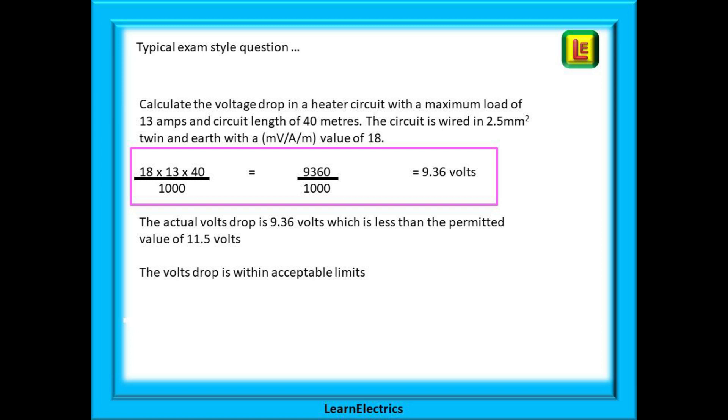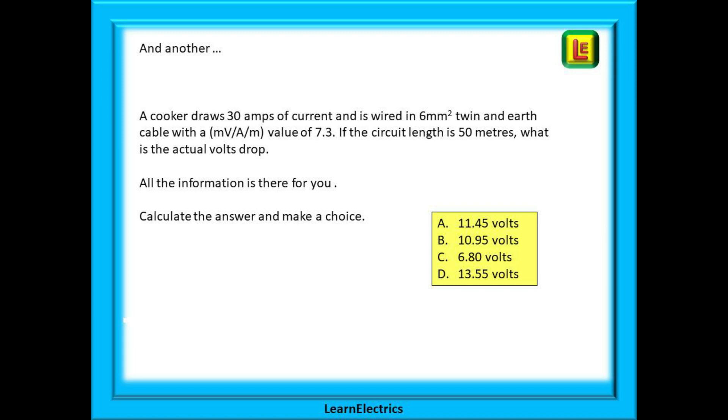This is less than the 11.5 volts permitted and is therefore an acceptable loss. And another, this time a cooker circuit. All the information you need is in the question. Pause the video whilst you work it out and then make your choice from the four that are offered. If you have done it correctly you should have an answer of about 10.95 volts give or take a tiny amount. And again this is within acceptable limits.